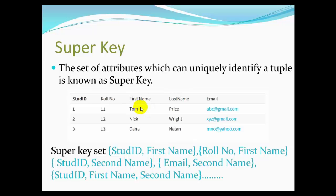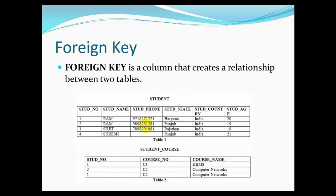A super key that is not a candidate key contains extra attributes. Every candidate key is a super key, but not every super key is a candidate key. If a row can be uniquely identified, it qualifies as a super key. Next, the foreign key — a foreign key is used to link two tables together.